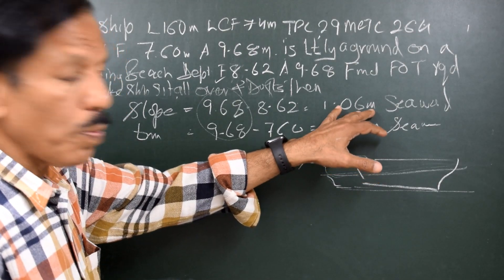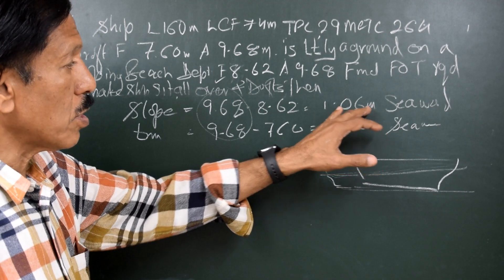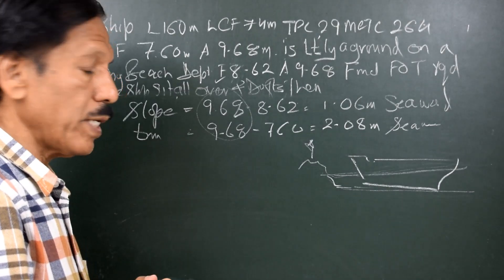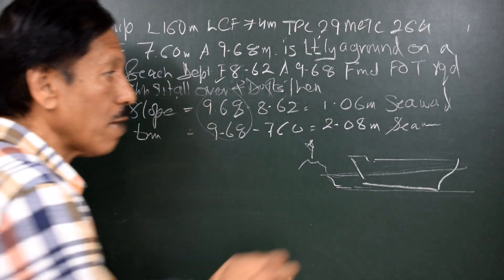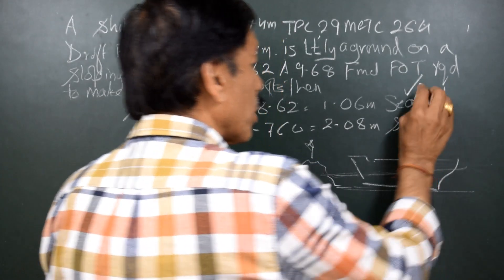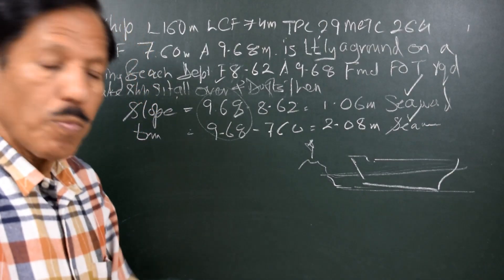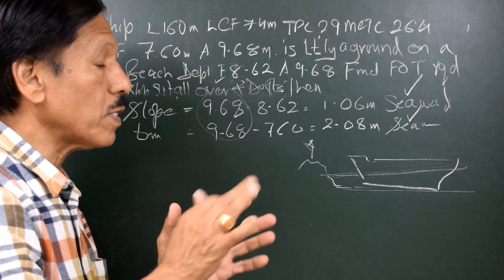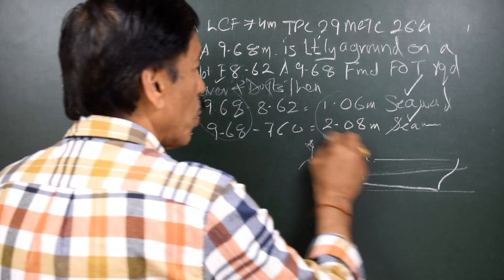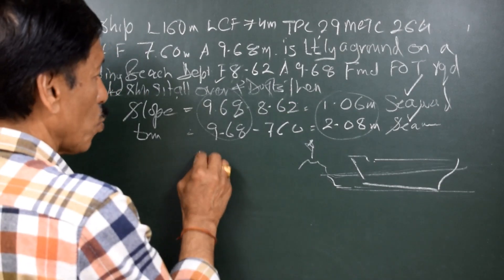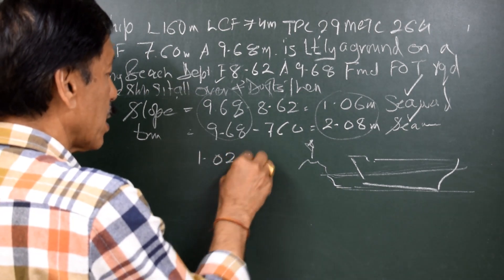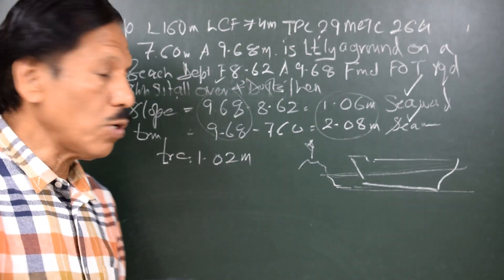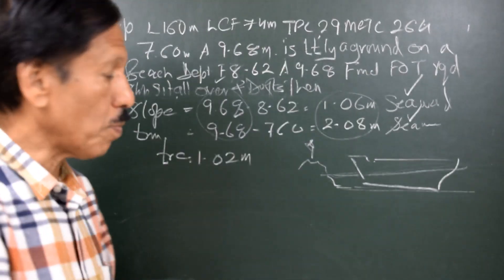So now the slope of the beach is 1.06 meters seawards and trim of the ship is 2.08 meters seawards. Both have the same name. We find out the difference of the two and the difference of the two is 1.02 meters and this is equal to trim change. Trim change 1.02 meters will cause the ship to sit all over.